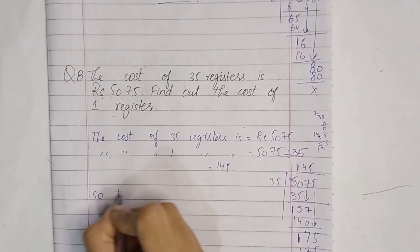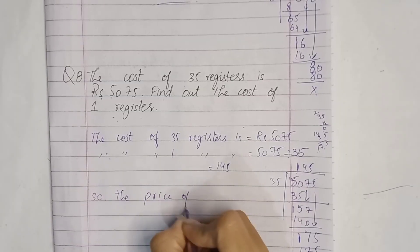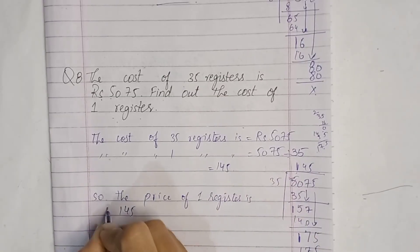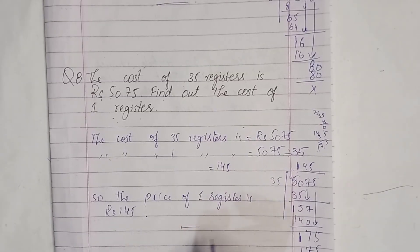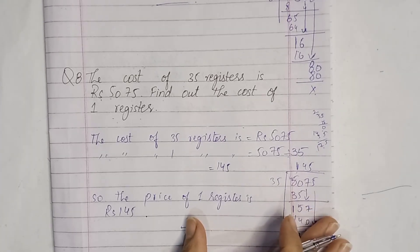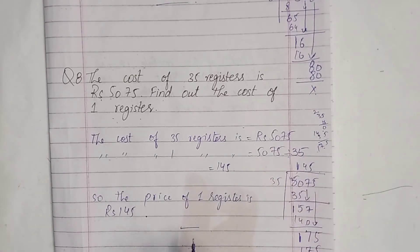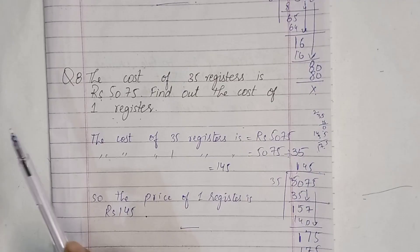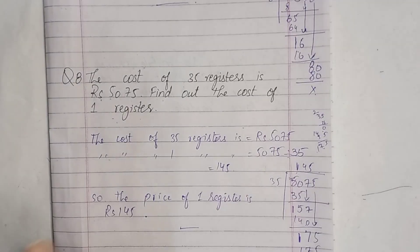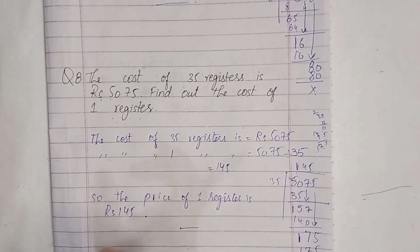The answer is 145. So the price of one register is rupees 145. Exercise one is now completely solved. I hope you understand the unitary method very well. It is very simple: when we have to find out more, we multiply; and when we have to find out one, we divide. Thank you very much for watching. Take care. Allah Hafiz.